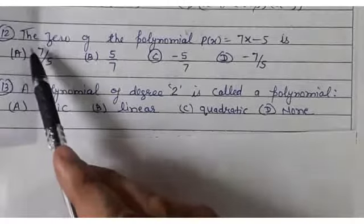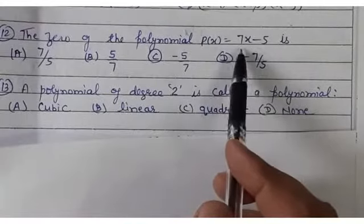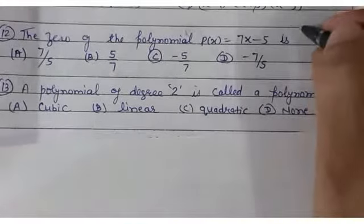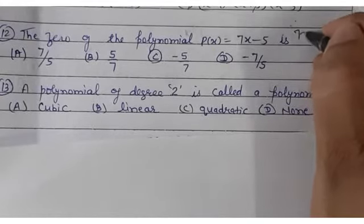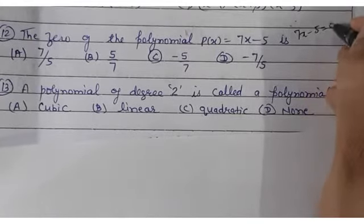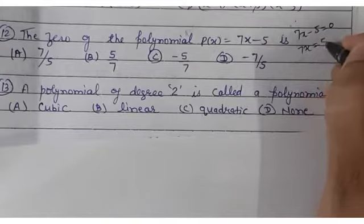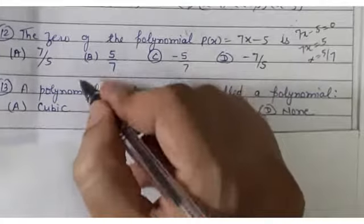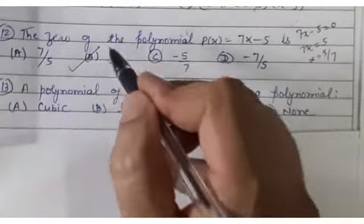Question number 12: the zero of polynomial P(x) = 7x − 5. Set 7x − 5 = 0, so 7x = 5, giving x = 5/7. Option B is the answer.